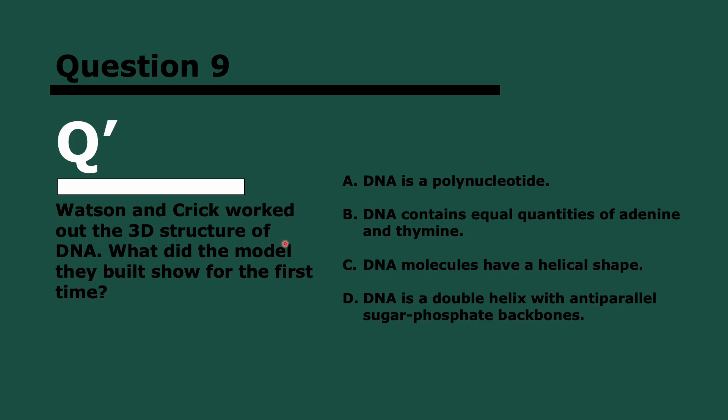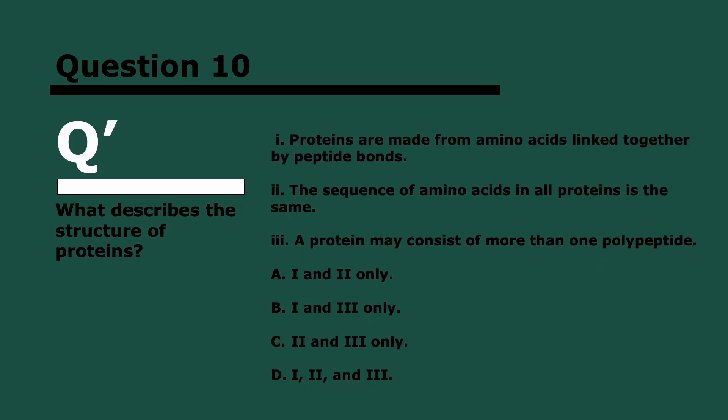Question nine. Watson and Crick worked out the 3D structure of DNA. What did the model they built show for the first time? This is tricky because these are all true, but only one of them was shown by Watson and Crick. Either you remember or you don't. Three, two, and one. It's D. They figured out that it was a double helix and the two strands were anti-parallel. Not much explanation there, you just need to remember.